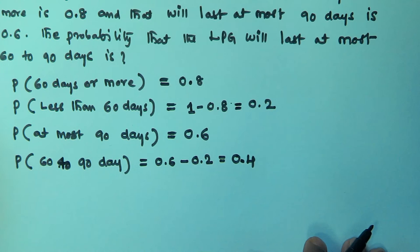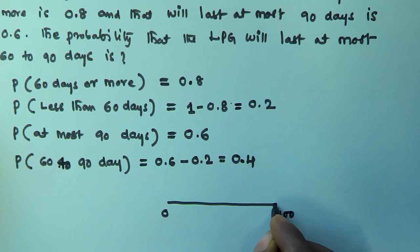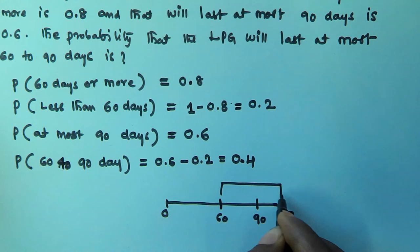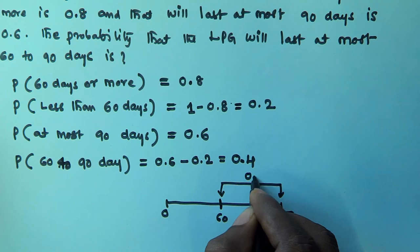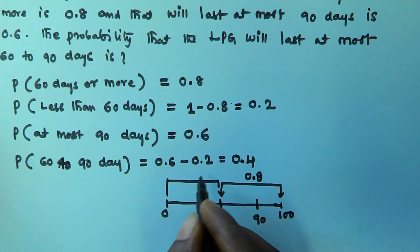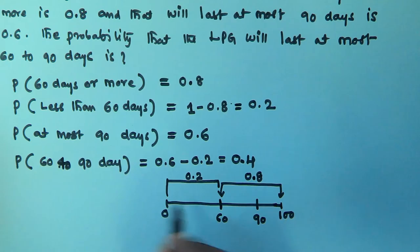Let us assume there are a total of 100 days, representing 0 to 100. It is given that 60 days or more — so let us mark 60 days here, and 90 days here. The probability of 60 days or more means the LPG cylinder will last from 60 to 100 days, and that probability is 0.8. Since the total probability is 1, the remaining portion is 0.2.